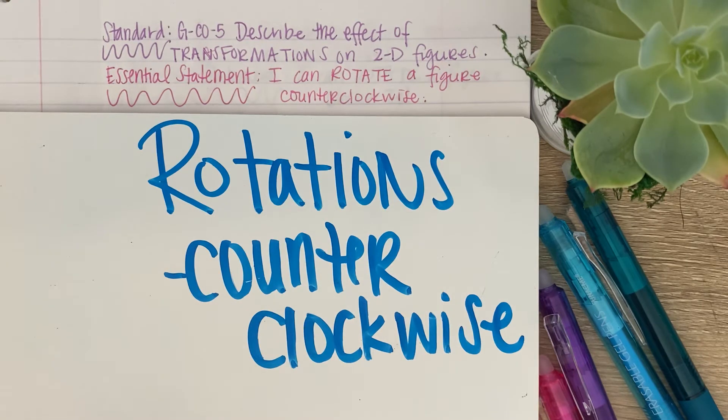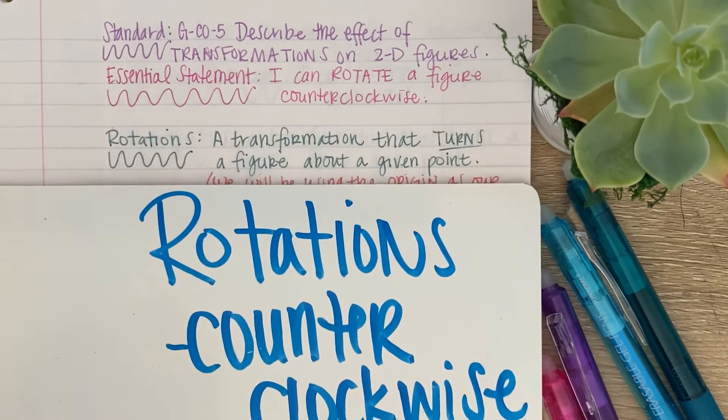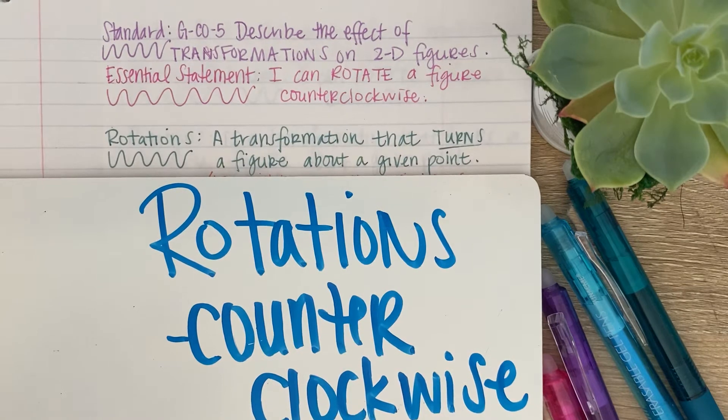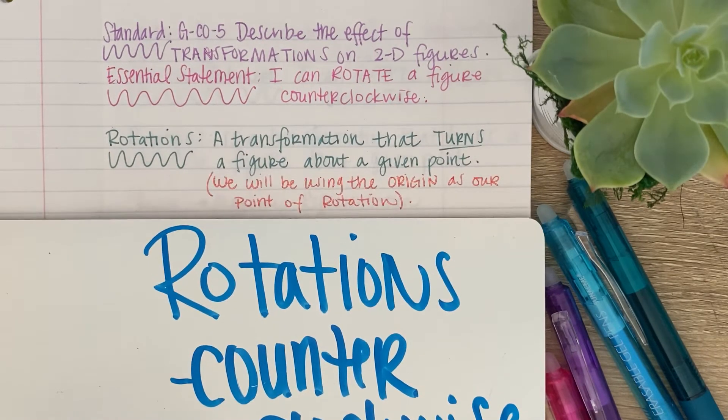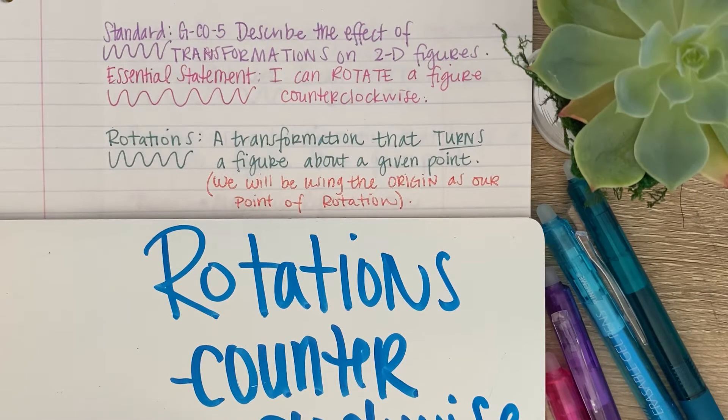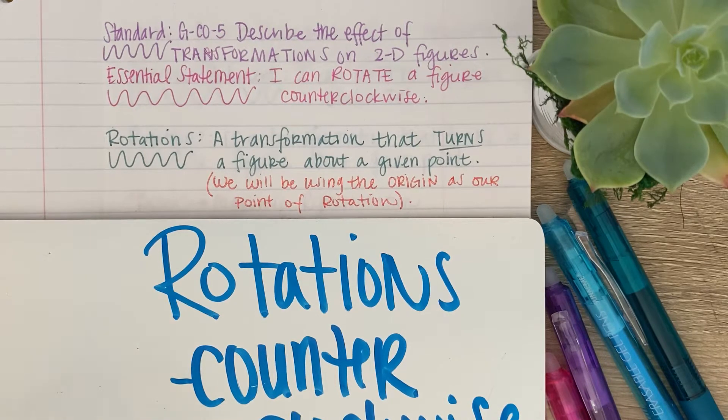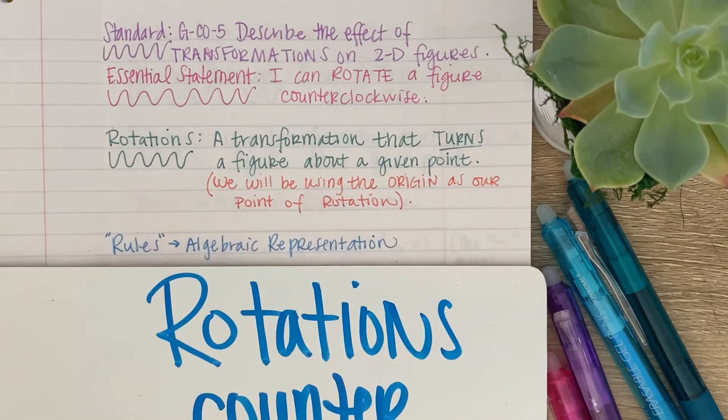So, a couple of things that we need to know first. What is a rotation? Well, a rotation is a transformation that turns a figure about a given point. For our lessons, we will be using the origin as our point of rotation. So our transformation turns a figure about a given point.